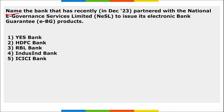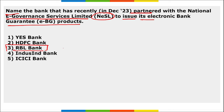Next: name the bank that has recently partnered with NESL (National e-Governance Services Limited) to issue electronic bank guarantee products. It is RBL Bank. Electronic bank guarantees (EBGs) are guarantees provided by a bank on behalf of a company — if the company fails to pay, the bank makes the payment.